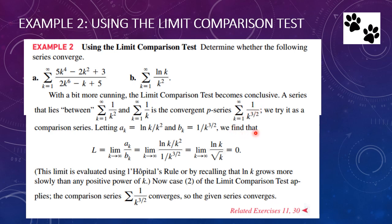The text suggests we need to find another series between those two — and the series recommended is the p-series 1 over k to the 3 halves, where the exponent is greater than 1, making it a convergent series. So let's try this as a comparison series, making our function ln(k)/k² equal to a and 1 over k to the 3 halves equal to b, and now we're using a convergent series.